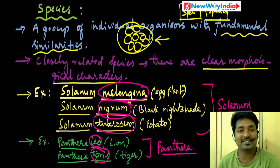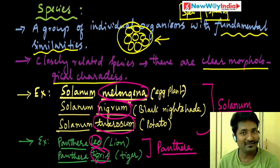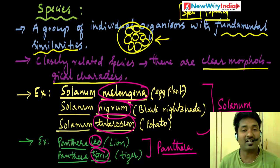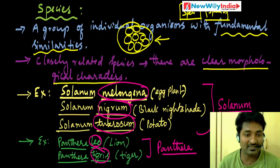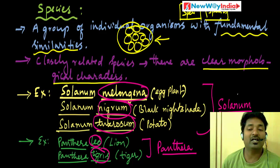You need to understand clearly: what is a species? It is a group of individual organisms with fundamental similarities, and different species come under the same genus because of clear morphological differences. Examples are Solanum melongena, Solanum nigrum, Solanum tuberosum — three different species but same genus Solanum. Panthera leo and Panthera tigris are two different species but same genus Panthera. These come up in exam questions, like 'identify the species which does not belong to the Solanum genus.'